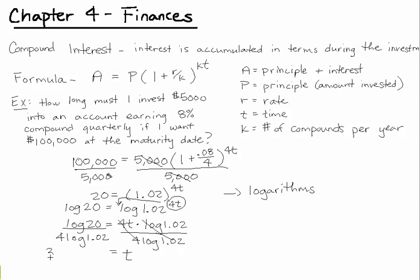And once you plug that into the calculator, it should give you 37, and I'm going to round to just two decimal places. 37.82 years. And you can round that up to 38 years. So it would take about 38 years for our initial investment of $5,000 to grow to $100,000.